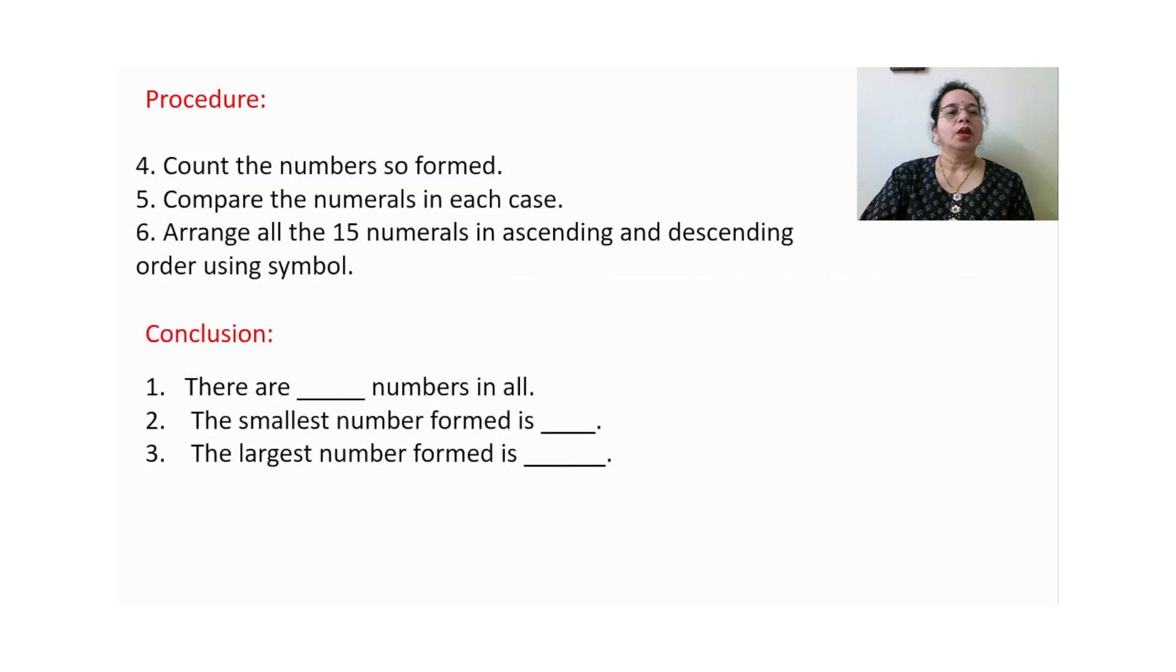So the procedure everybody understood. So we will count the numbers. Compare the numeral in each case and arrange all the 15 numerals. We will get total 15 numbers in the whole activity. We will arrange in ascending and descending order using symbol. So conclusion will be there are 15 numbers in all. The smallest number formed is that you can find out and the largest number formed is you can find out and write down here.